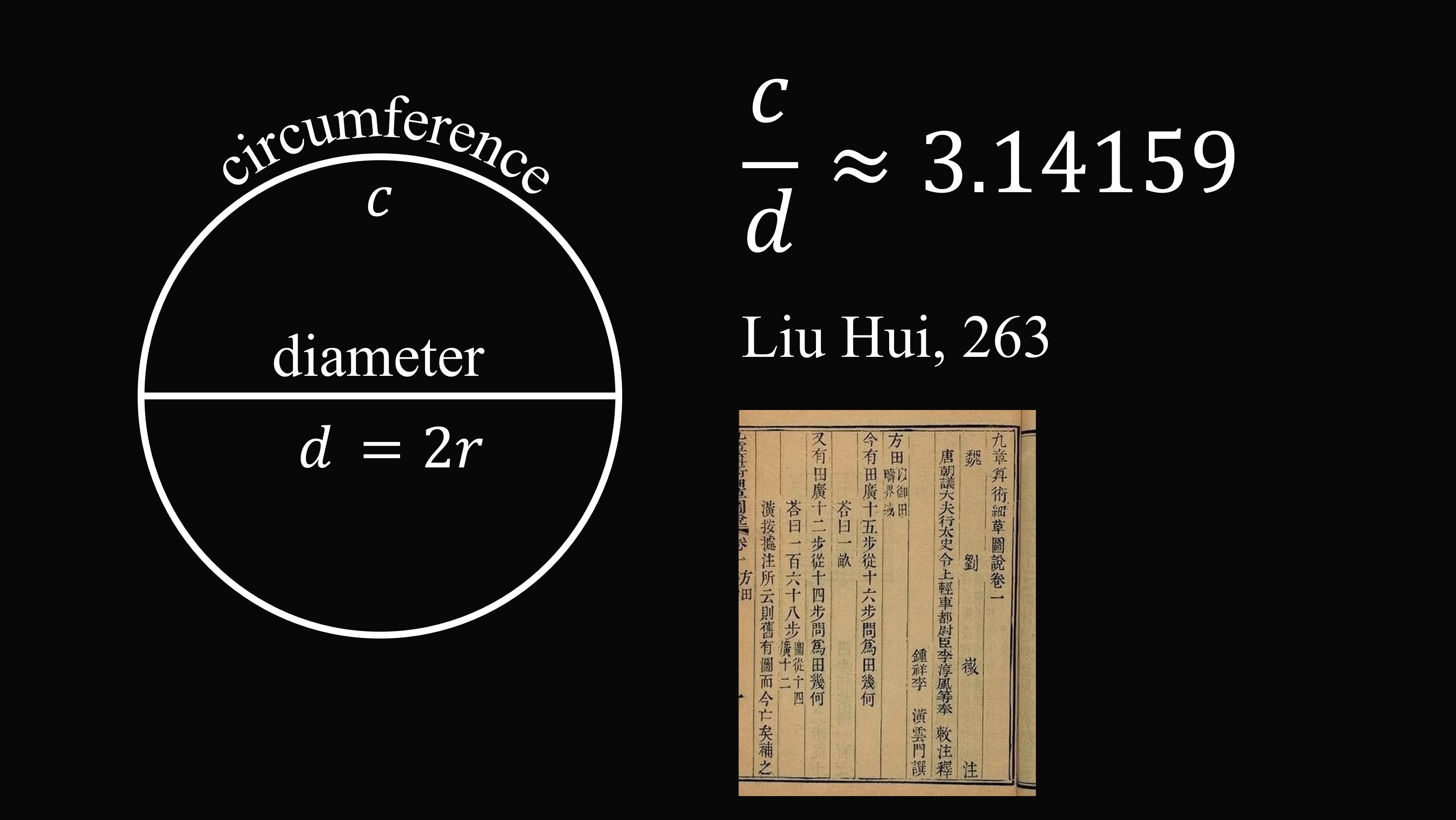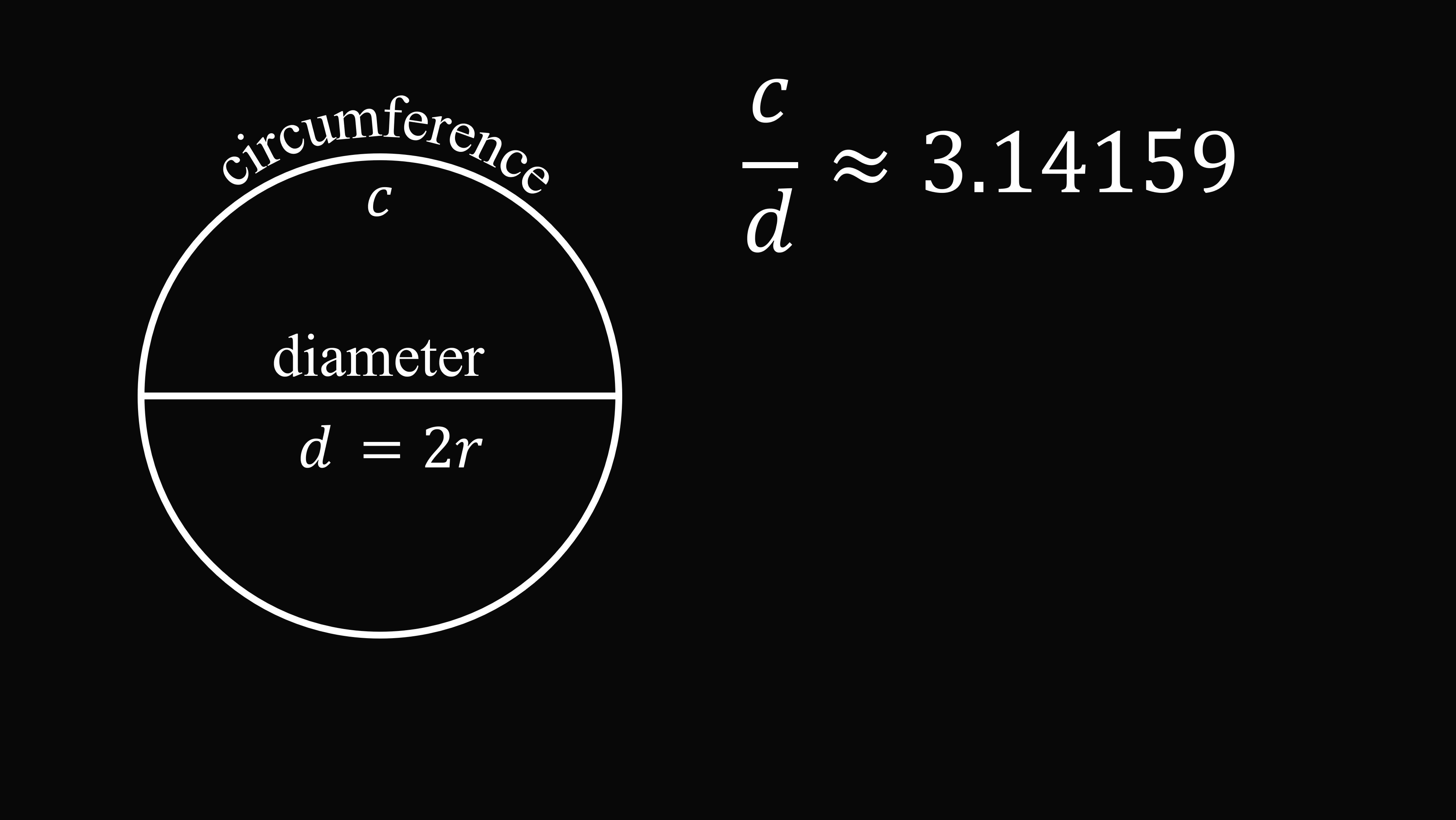Very interestingly, these values were so accurate that they were not surpassed for nearly 1,000 years. It turns out this ratio is exactly the approximation of what we call pi. But they themselves didn't use that symbol.